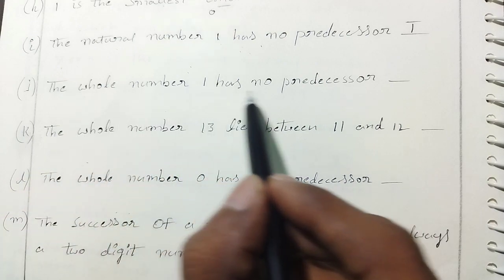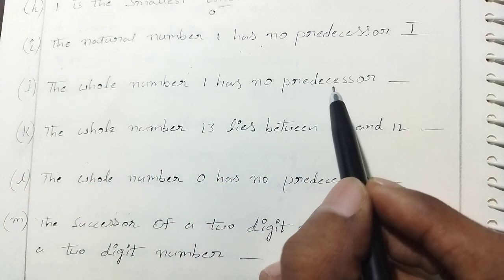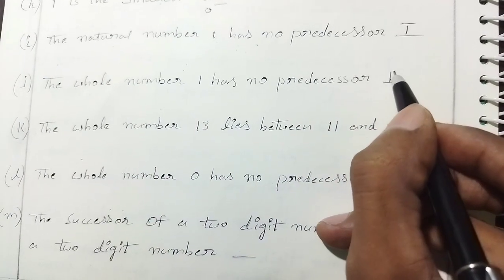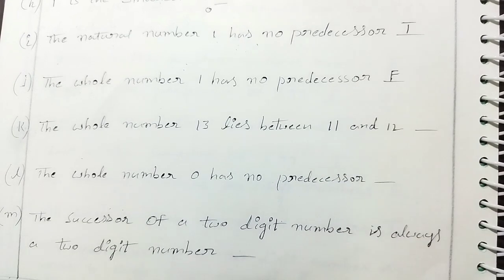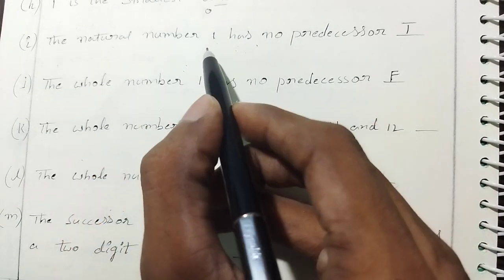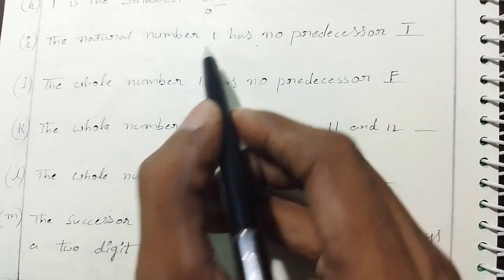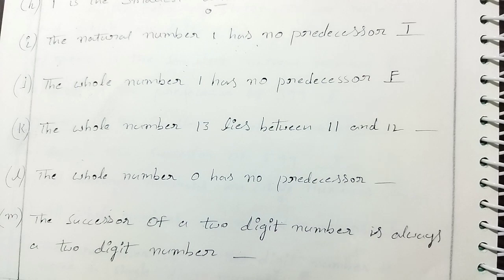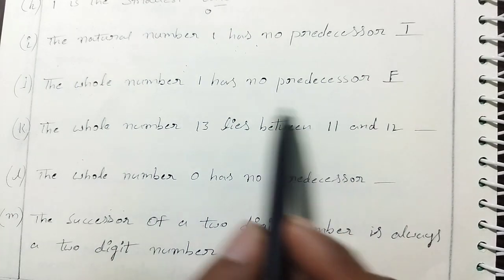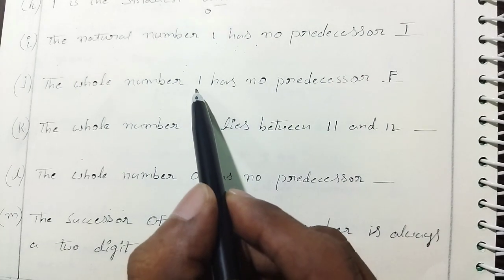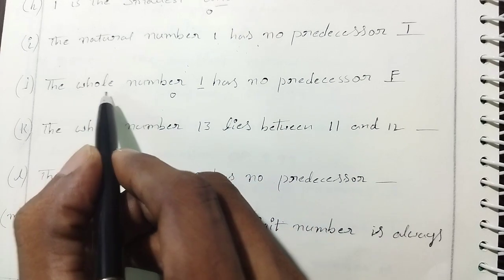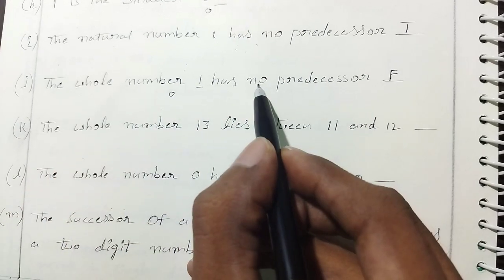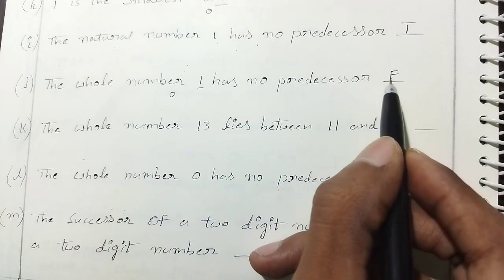Next: 'The whole number 1 has no predecessor.' This is false. The predecessor of 1 is 0, and 0 is a whole number. So this is false.